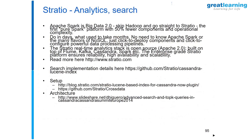Stratio is essentially another option that you have. You can clearly see it essentially features the Cassandra Lucene Index, so that's yet another option for you to do your analysis using a search engine. I have not used Stratio, but by the sounds of it I like it, and I intend to implement it at some point in time.